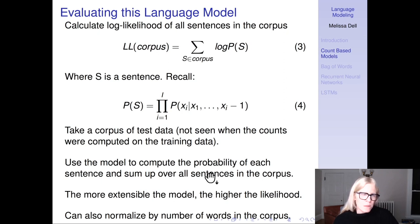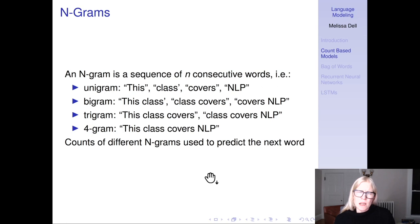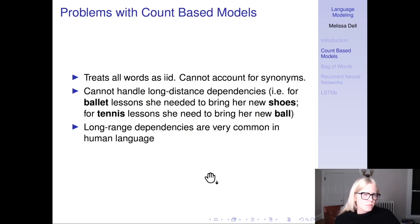A common count-based approach is n-grams. An n-gram is a sequence of n consecutive words. A unigram is just one word, like 'this class covers NLP'. You could have bigrams: 'this class', 'class covers', 'covers NLP', and so on - trigrams, four-grams. Counts of different n-grams can be used to predict the next word. What's the problem with this approach? It treats all words as independent, can't account for synonyms. Another major problem is it can't handle long-range dependencies. For ballet lesson she needed to bring her new shoes versus for tennis lessons she needed to bring her new ball. Long-range dependencies are very common in human language, and not being able to account for them is a problem.